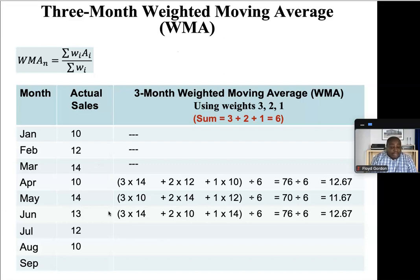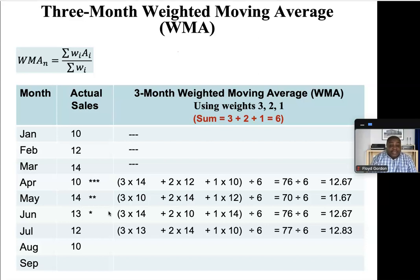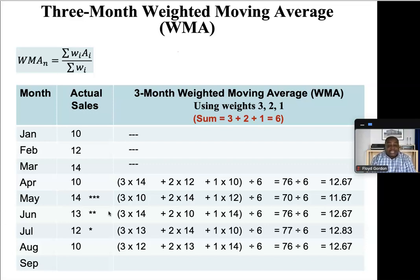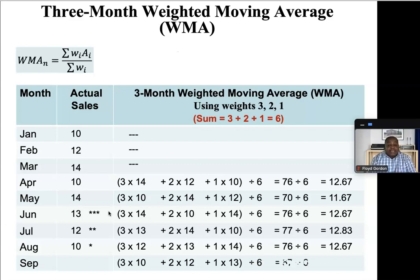Moving on to July: three times 13, plus two times 14, plus one times ten for April, divided by six — giving a forecast of 12.83 for July. Moving on to August: three times 12 for July, plus two times 13 for June, plus one times 14, divided by six — giving 76 over six, or 12.67 as the forecast for August. Then September: three times ten, the most recent month, plus two times 12, plus one times 13 — that gives 11.17 as the forecast for September.